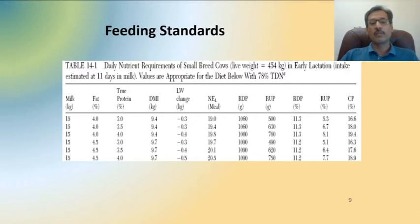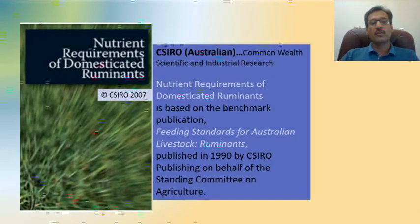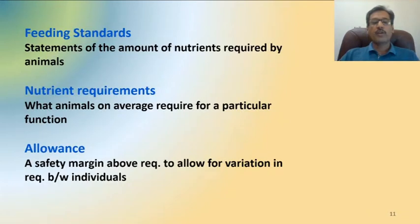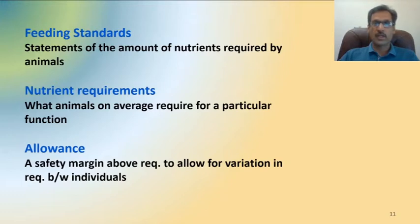This shows how nutrient requirements are expressed. CSIRO in 2007 published nutrient requirements of domesticated ruminants. When we consider feeding standards, the nutrient requirements are given on the basis of average values. For practical purposes, we add an allowance known as a safety margin, considered above the average requirement. This safety margin helps fulfill the nutrient requirements of animals that need more than the herd average.